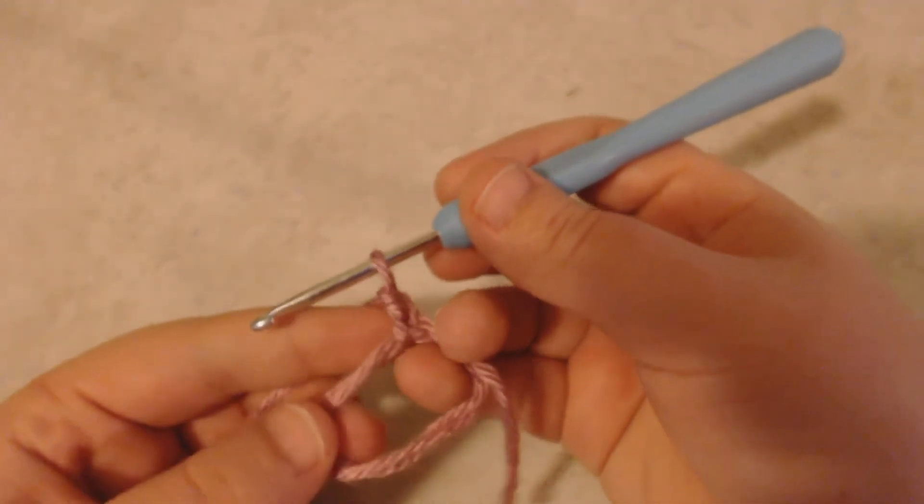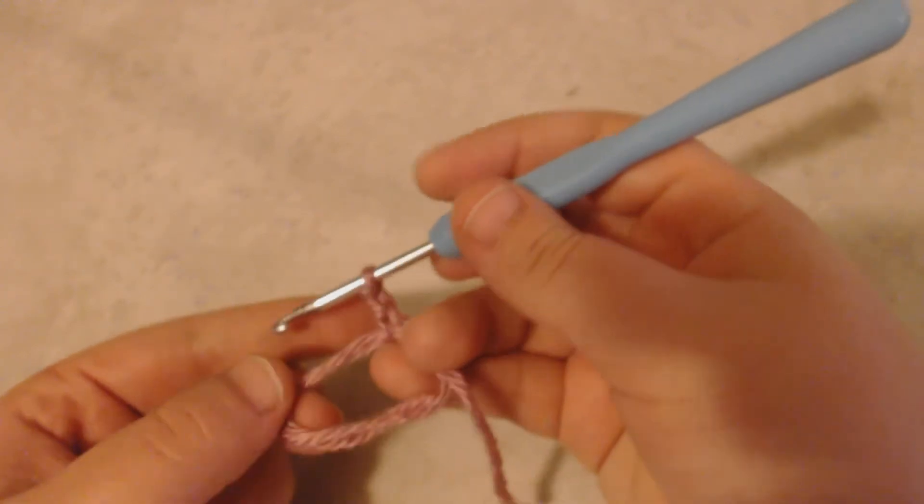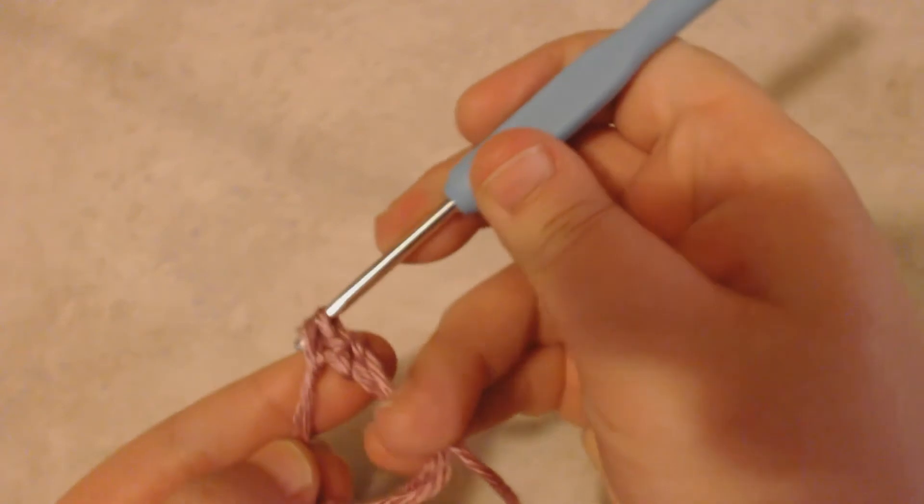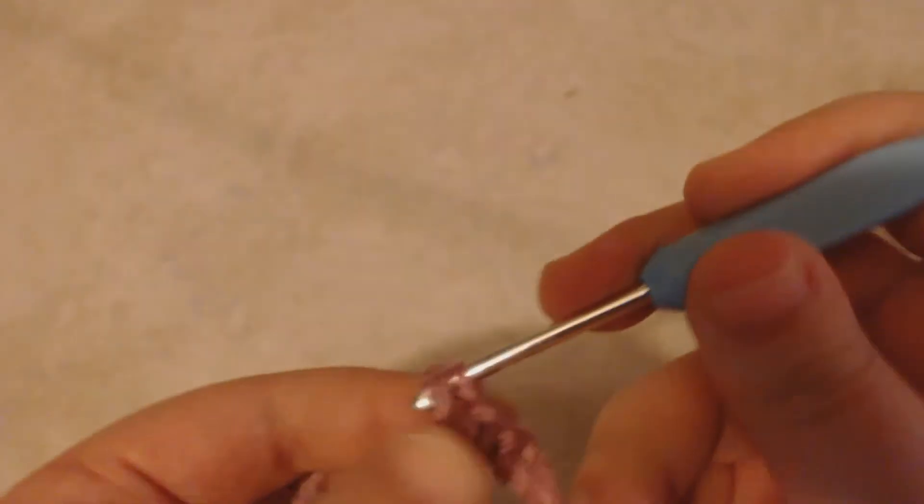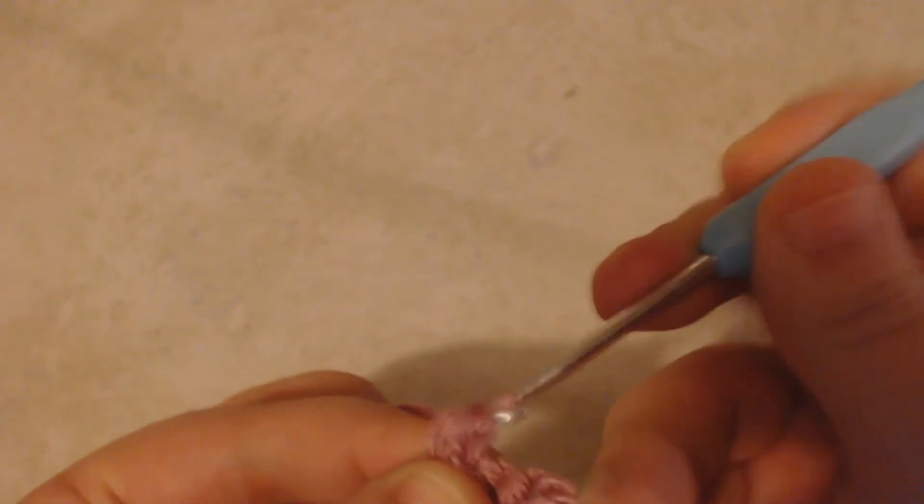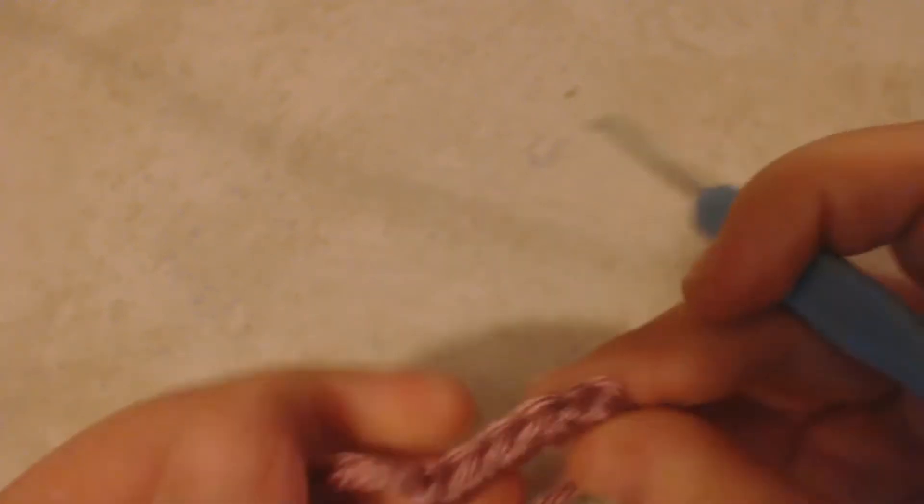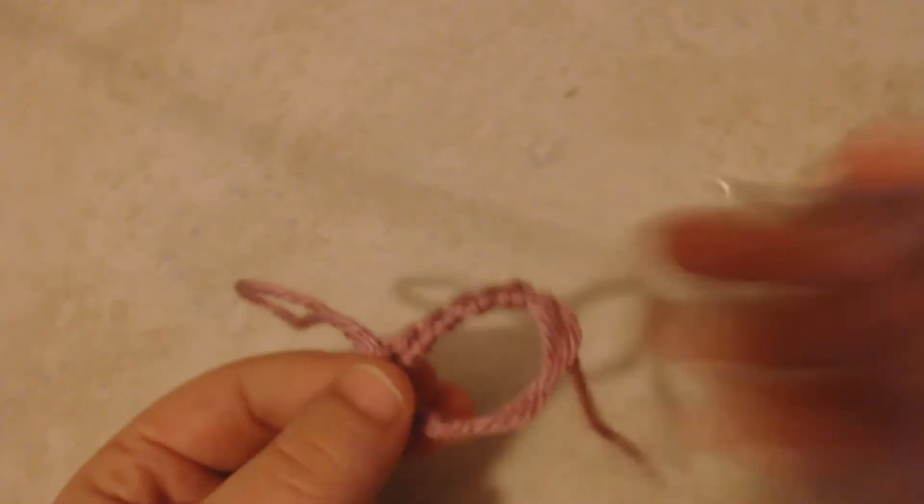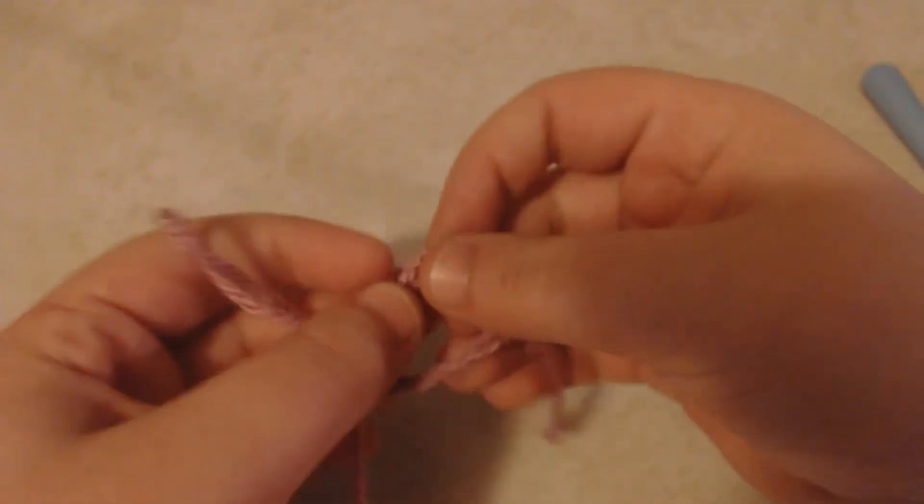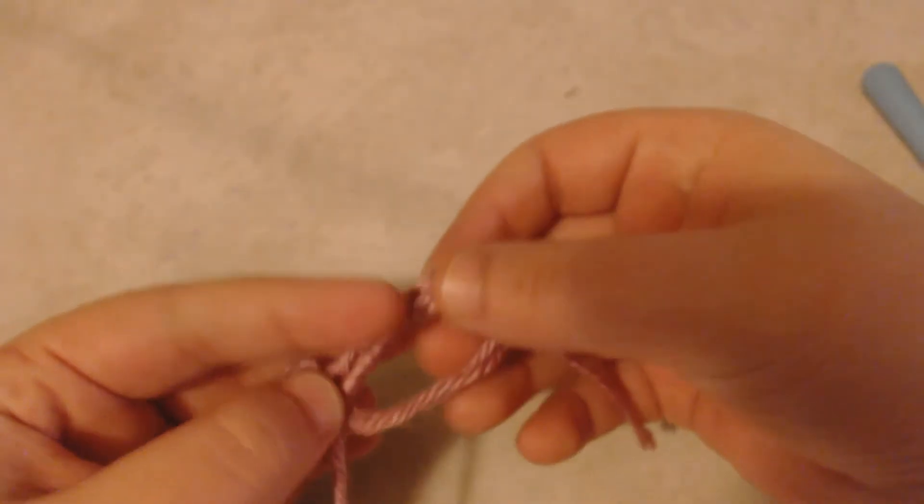Now I want to have six stitches total, so I'm going to single crochet five more times into my two loops. So I've gotten to the end of five more stitches, so now I'm going to close my magic circle.